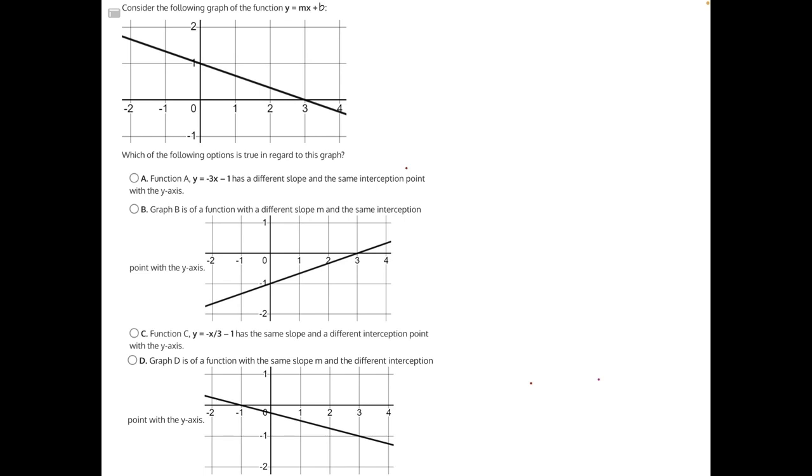A. Function A, y equals negative 3x minus 1, has a different slope but the same interception point with the y-axis.